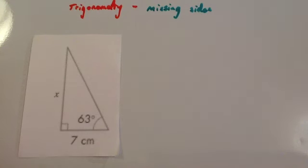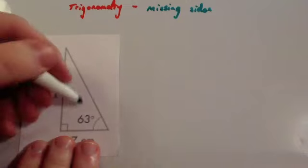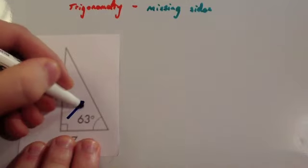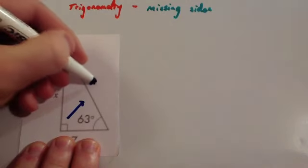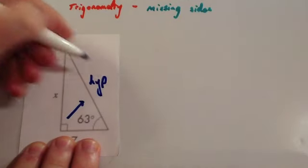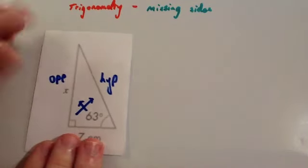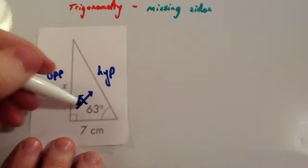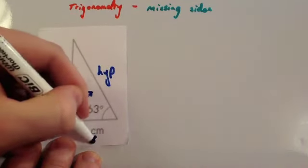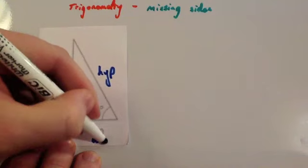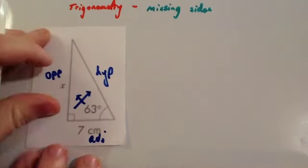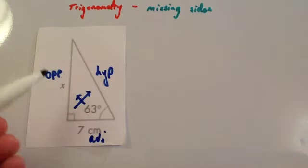First thing you should do always is label the sides. The side opposite the right angle is called the hypotenuse. The side opposite the angle is called the opposite, and the side that is left over is then called the adjacent. So we've got the opposite, the hypotenuse, and the adjacent.